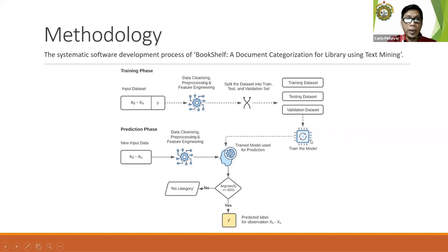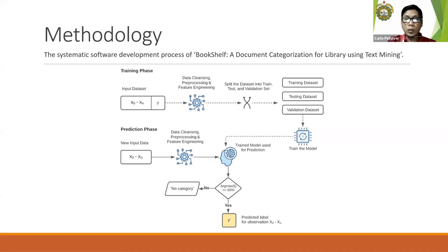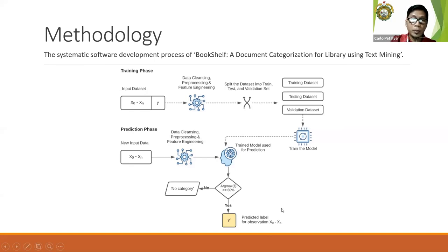For the prediction phase, the test or input data also undergoes the preprocessing stage and is predicted by the model created with SVM. A test input is assigned to a specific category with a probability likelihood threshold set at 60% or greater. Otherwise, it will be assigned to no category, since some archived documents from the library may have no relationship to any course reference or syllabus.